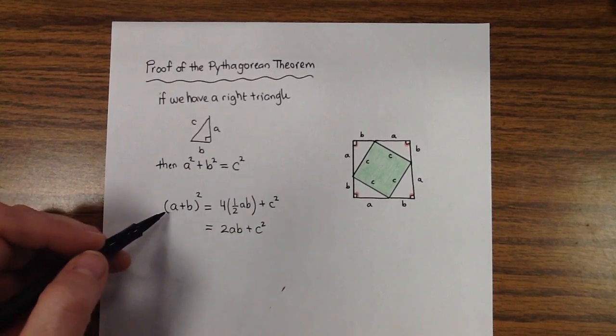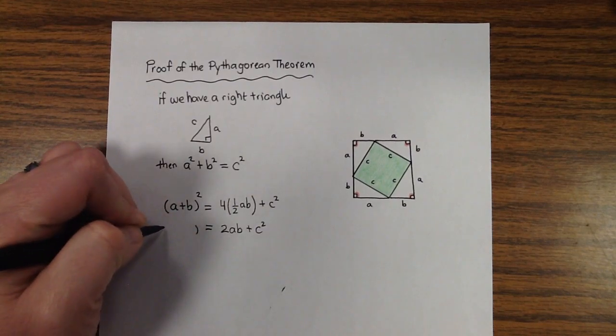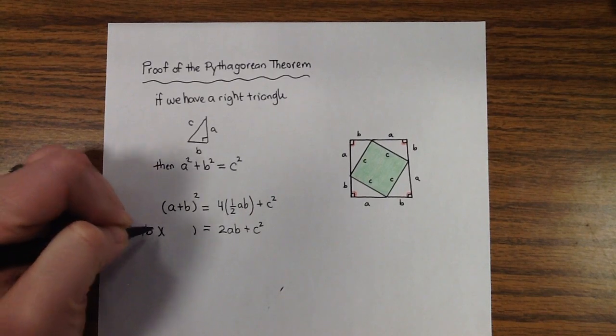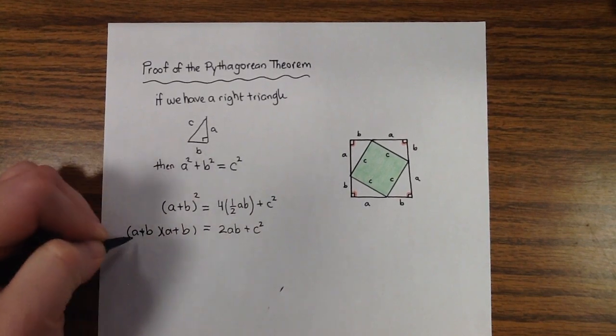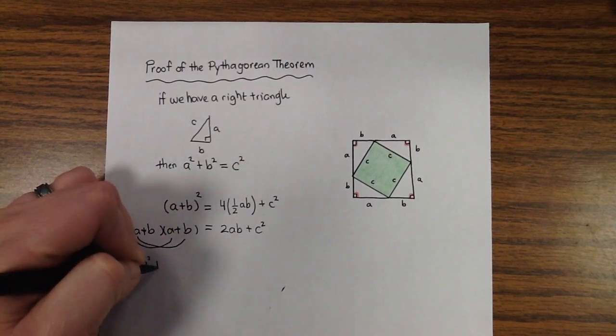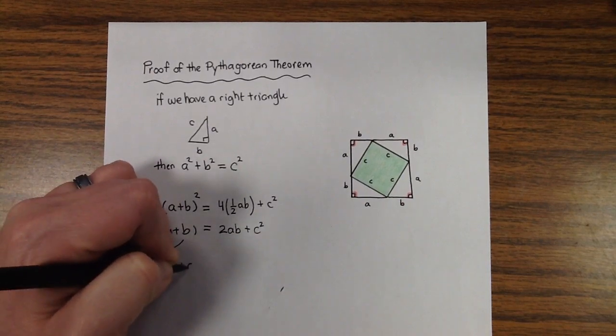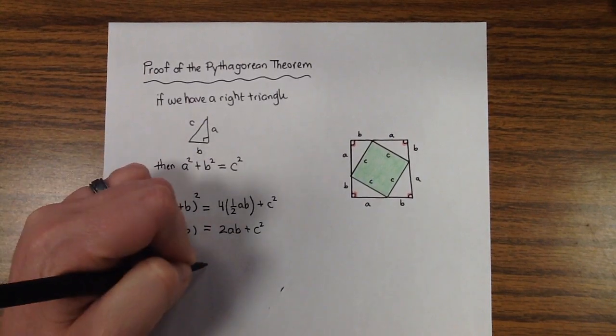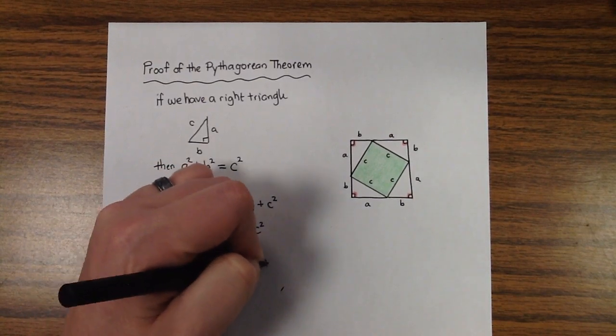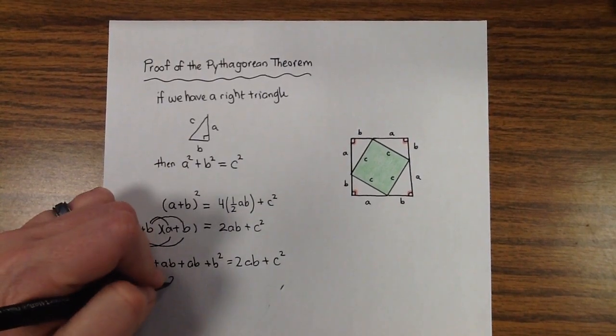And what I'm going to do now is I'm going to use FOIL: first, outer, inner, last. And so I'm going to take A plus B times A plus B. First two is A squared. Outer two is AB. Inner two is AB. Last two is B squared. And so I get the following equation. This connects. This is 2AB.